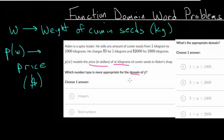So which number type is more appropriate for the domain? Well, the domain deals with the inside letter. So in this case, we have P(w). So our domain is going to be dealing with w, the weight of the cumin seeds. And so what number type would be more appropriate? Well, you need to understand what an integer is and what a real number is.